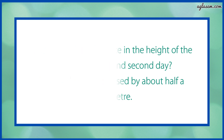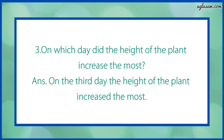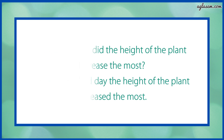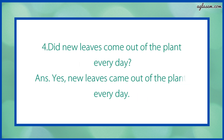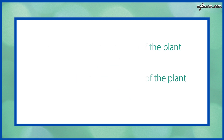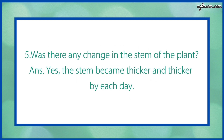Question number 3 says: on which day did the height of the plant increase the most? Answer: on the third day, the height of the plant increased the most. Fourth: did new leaves come out of the plant every day? Answer: yes, new leaves come out of the plant every day. Fifth question says: was there any change in the stem of the plant? Answer: yes, the stem became thicker and thicker each day.